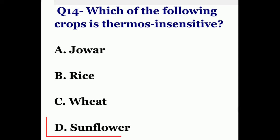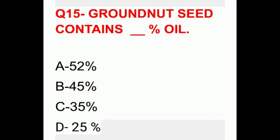Question fourteen: which of the following crops is thermo-insensitive? The options are jowar, rice, wheat, or sunflower. The correct answer is sunflower. Sunflower is a photo and thermo-insensitive crop which can be grown in all seasons for its edible oil. Question fifteen: groundnut seed contains what percent oil? The options are 52%, 45%, 35%, or 25%. The correct answer is 45%.